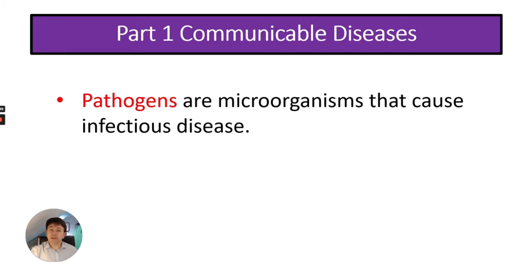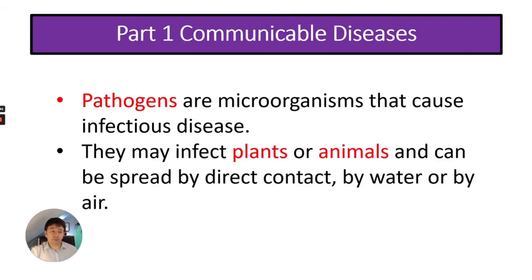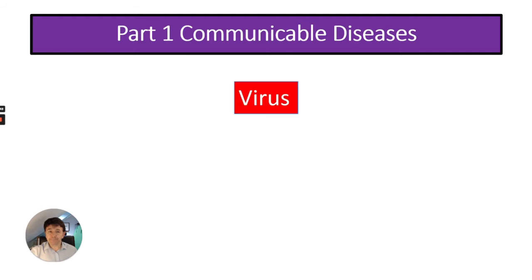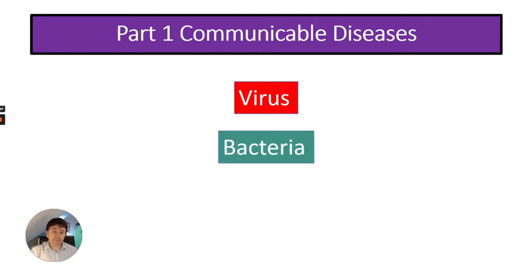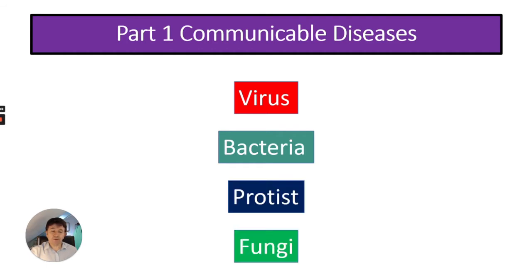What is a communicable disease? Pathogens are microbes or microorganisms that cause infectious disease. They may infect plants or animals and can be spread by direct contact, by water or by air. There are four types of pathogens: viruses, bacteria, protists, and fungi.